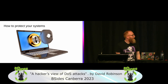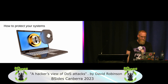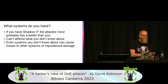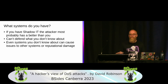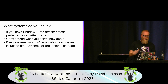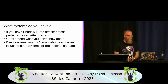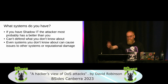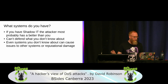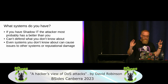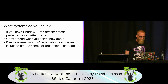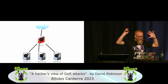Now let's look at how you can actually protect your systems. First, you need to know what you have. If you have shadow IT, there's a chance the attacker knows more about your infrastructure than you do — you can't defend what you don't know about. Even systems you don't know about can still cause issues if they authenticate to your central auth, are part of a business process, or are still associated with your brand, creating reputational damage if targeted.